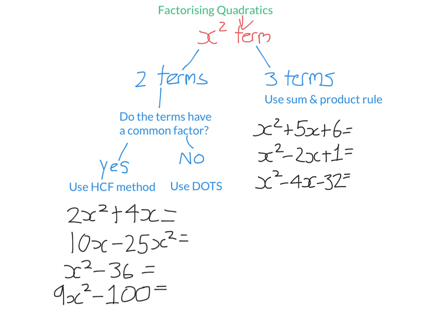So let's look at highest common factor method. You write the highest common factor out the front — here it's 2X, because two is the highest number that goes into both terms and they both have an X in common. Then inside the brackets: what do I times by 2X to get 2X squared? You need to multiply by X. What do you multiply by 2X to get 4X? It's just positive 2. And then we're done. If I expand this, I get the original expression.